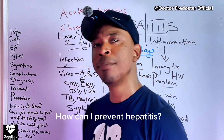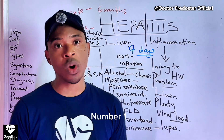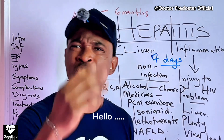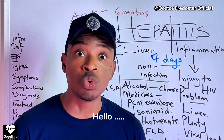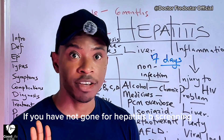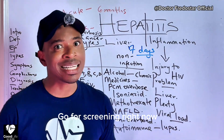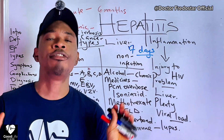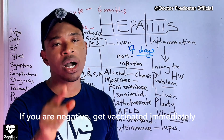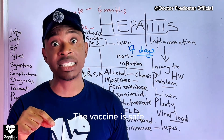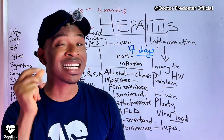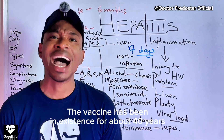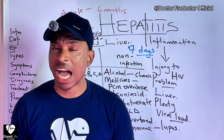How can you prevent hepatitis? Number one — if you have never tested yourself, go and do a test now. Then check whether it is in your body. If it is not there, go and collect the vaccine. The vaccine is safe — it has been in existence for more than 40 years.